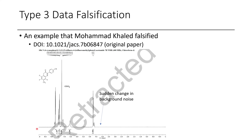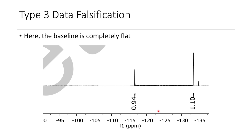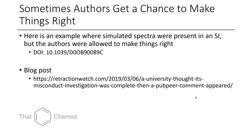Type 3 data falsification — the example from the paper we've been discussing — can be seen here. You can see background baseline noise exists in one part, but then after a peak, the line is suddenly thinner. That's a little suspicious. In the next example it's even worse: there's a normal baseline, then a weird white box, then normal baseline again. And if you zoom in, the baseline is completely flat — this is clearly falsified data. There may have been other examples in this manuscript; they didn't label which spectra were fake or not, but this one is a clear example.